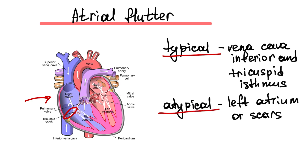Atypical atrial flutter is characterized by a wavefront not traveling around the tricuspid annulus, and it can involve the left atrium or scars after surgery.